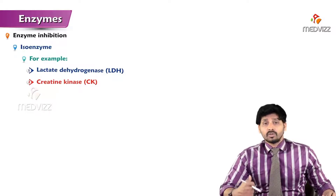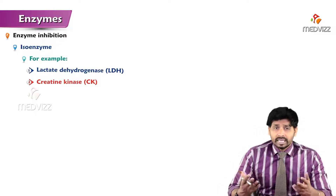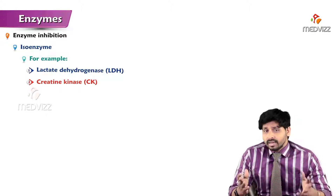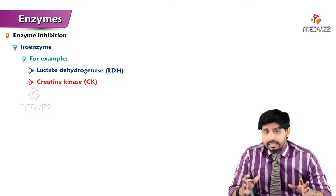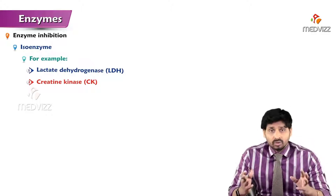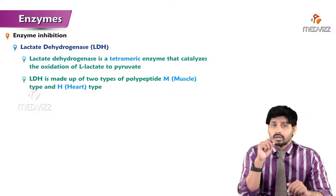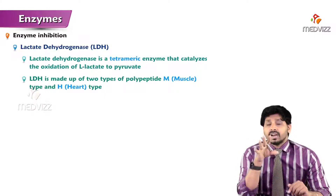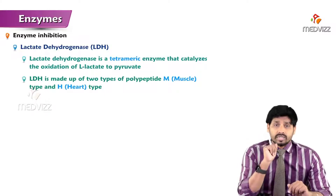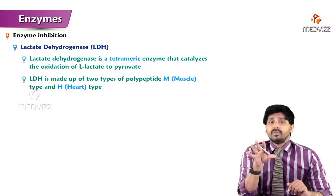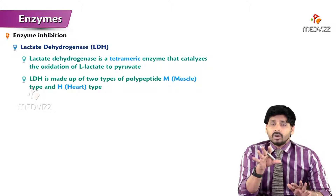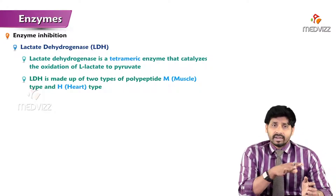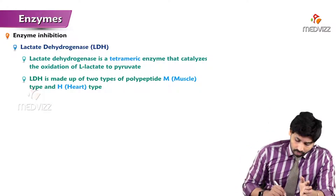There are many examples of isoenzymes in our body. Two prominent examples are lactate dehydrogenase and creatine kinase. Other enzymes like ALT and AST also come under isoenzymes. For lactate dehydrogenase, there are five forms, and all five forms catalyze the same reaction: conversion of pyruvate to lactate or lactate to pyruvate - a reversible reaction.